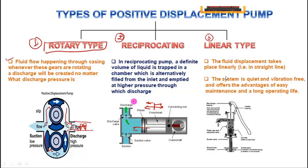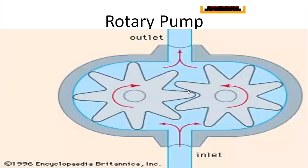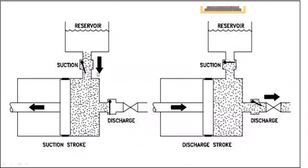The linear type of positive displacement pump displaces fluid linearly in a straight line. It is quiet, vibration free, and offers easy maintenance — a typical example is a hand bore-well pump. In the suction stroke, the suction valve is open and water is drawn from the reservoir; in the discharge stroke, the suction valve closes and the discharge valve opens so that the fluid is pushed to the destination.